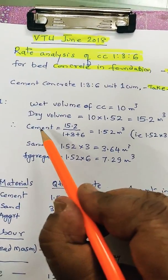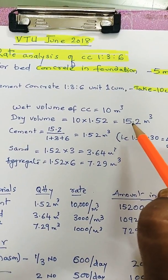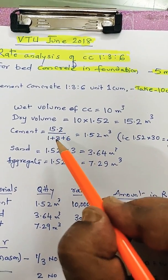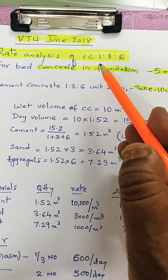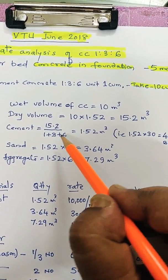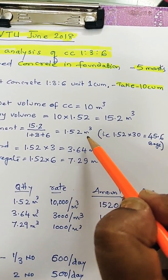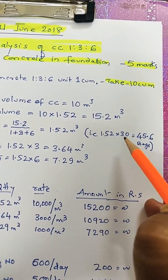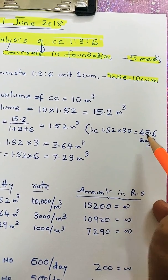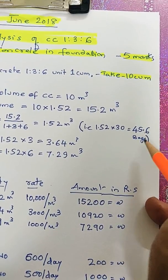So first is cement. You have to calculate cement by taking the dry volume divided by the ratio 1:3:6, so that is 1 plus 3 plus 6. It comes out to be 1.52 cubic meters, which equals approximately 45.6 bags of cement.